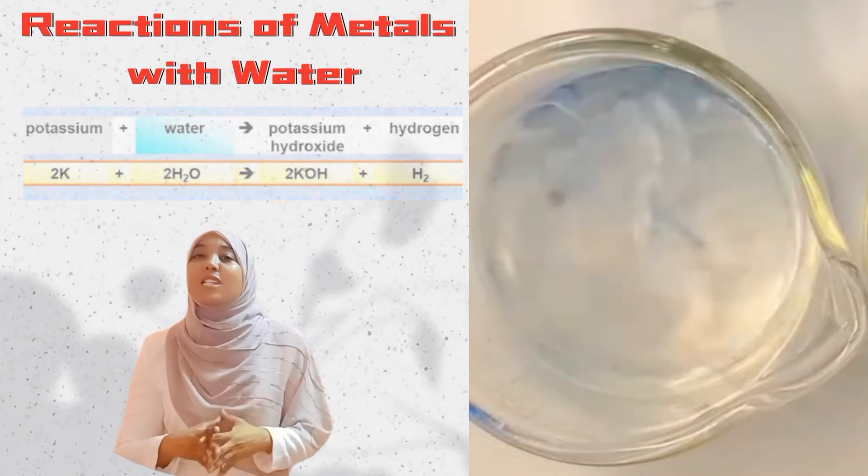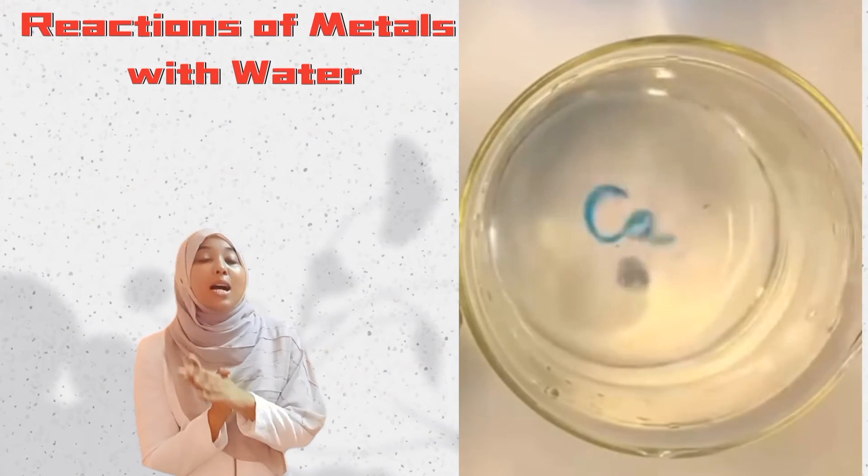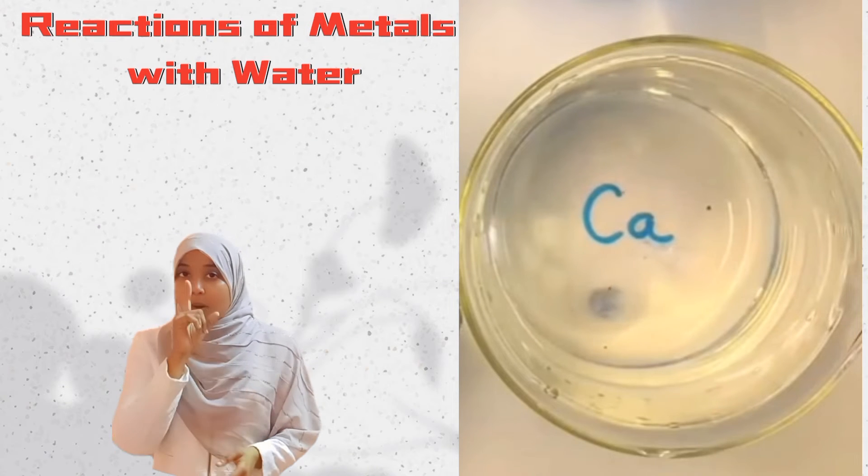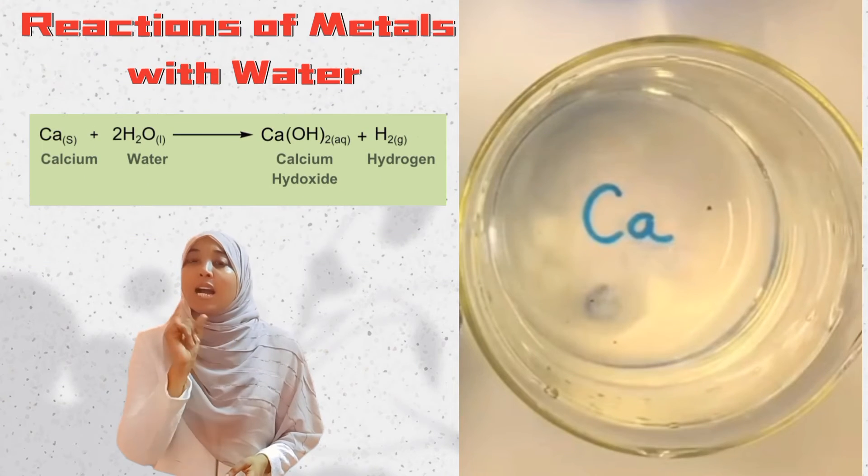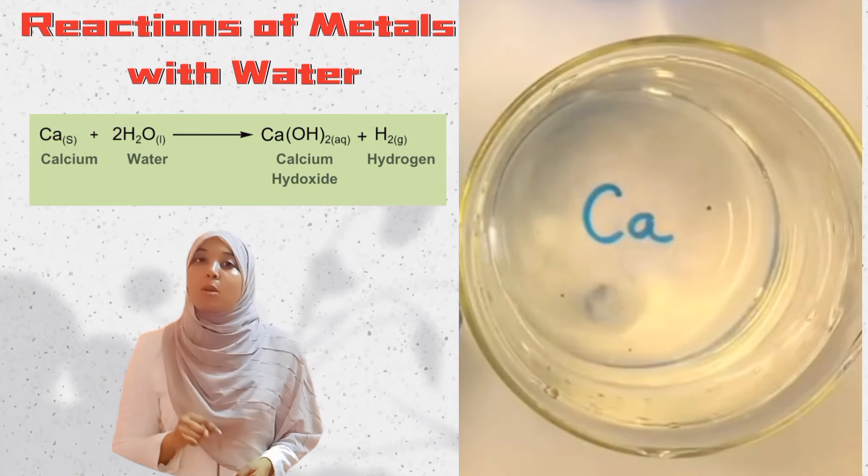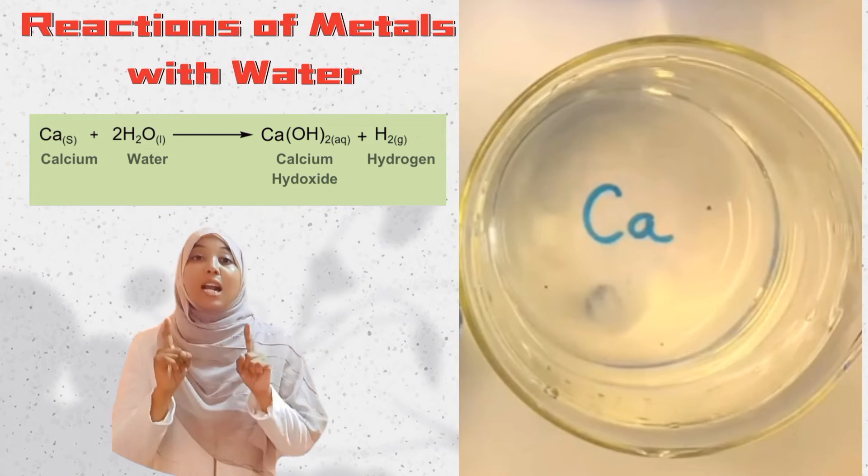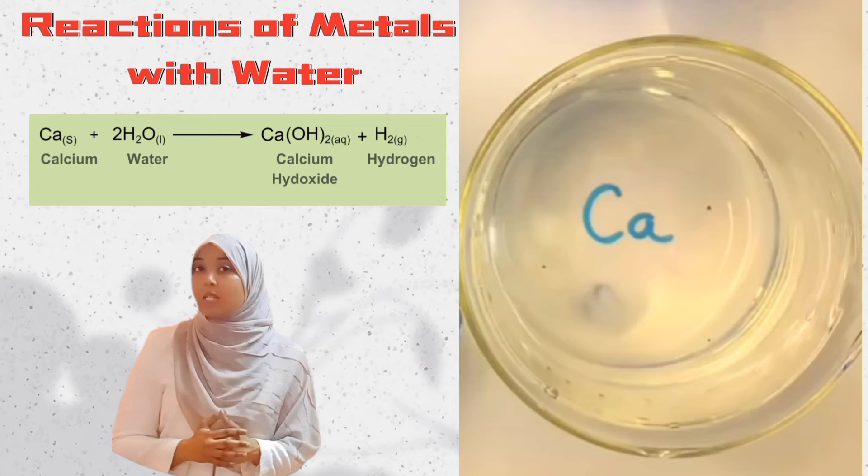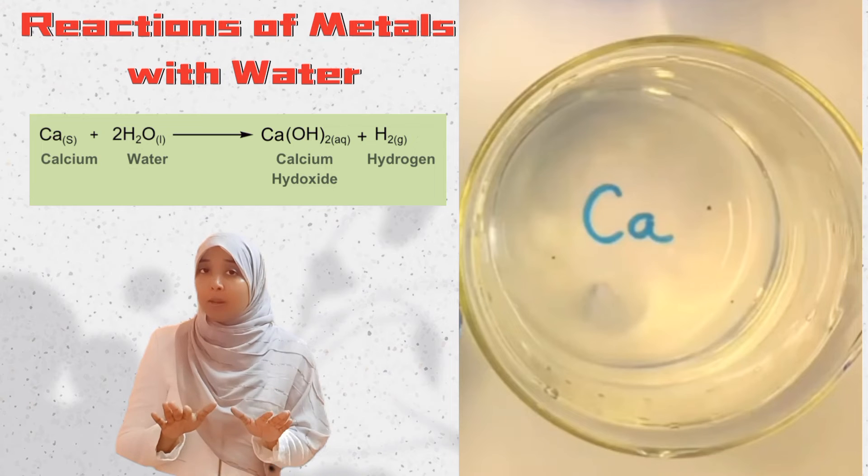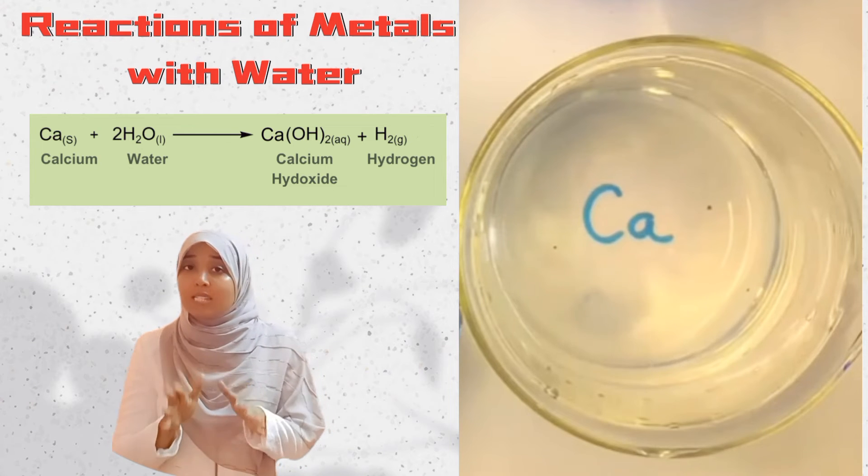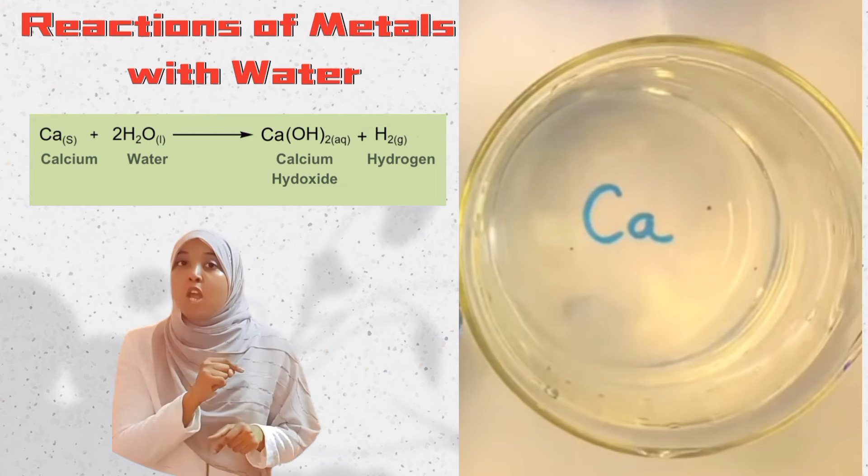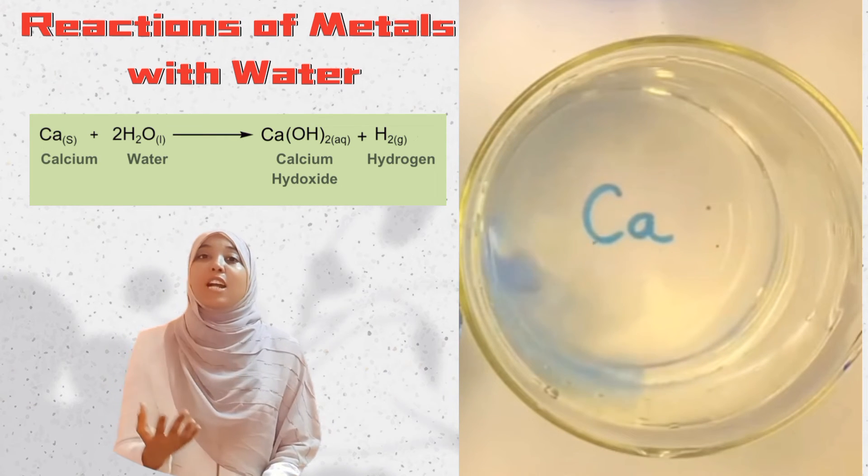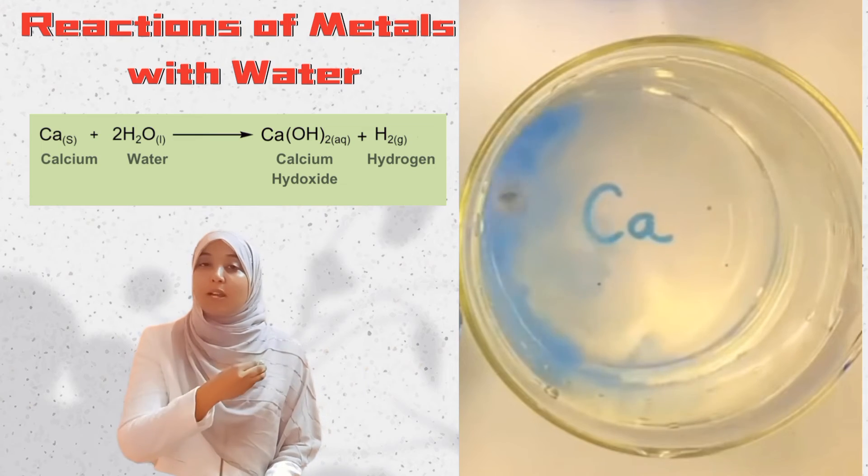Now our last one: calcium. Calcium is less reactive than all three metals. Observation number one: calcium metal sinks to the bottom of the beaker because calcium is denser than water. Then the reaction takes place. The reaction is slower than the other three, but it does happen. If you look closer, you can see fizzing—the production of a gas, which is hydrogen gas. The reaction leads to the formation of calcium hydroxide, which again is basic.